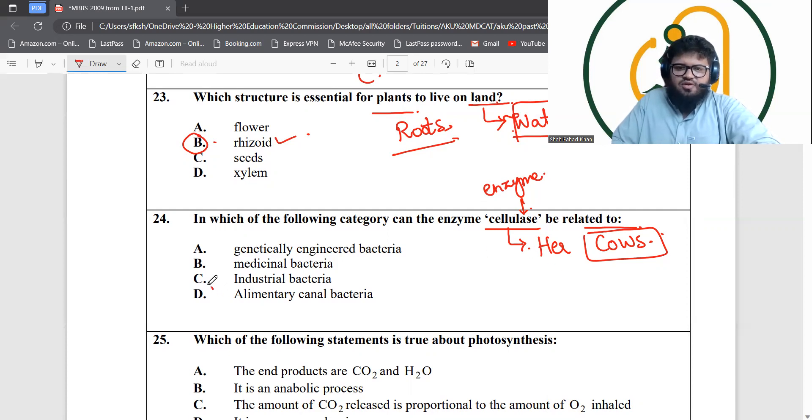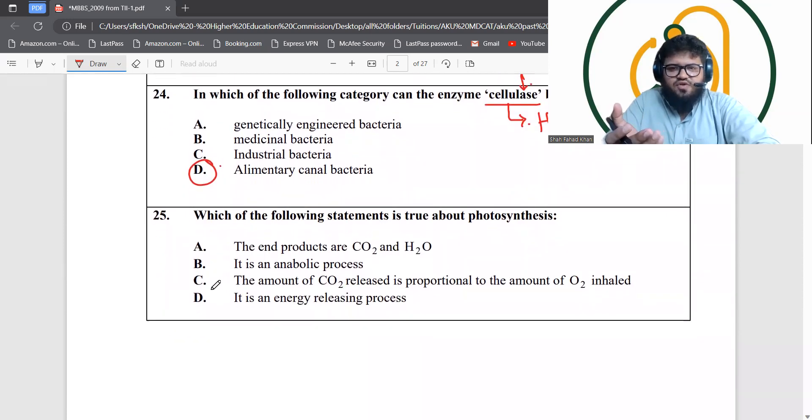Therefore it's an alimentary canal bacterium, because it's found in the alimentary canal bacteria. They don't have this enzyme in their gut intrinsically. It's actually these bacteria that are the normal flora of the gut found in herbivorous organisms that help break down the cellulose. That's why alimentary canal bacteria.